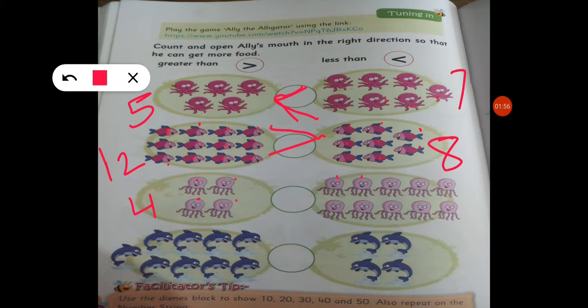Next, count the dolphins. One, two, three, four, five, six, seven, eight, nine. Here are nine dolphins. One, two, three, four. Here are four dolphins. So Ali's mouth will open towards more, which is nine. Nine is more than four, so on the nine side, draw the mouth. In this way, students, you have to complete this page.